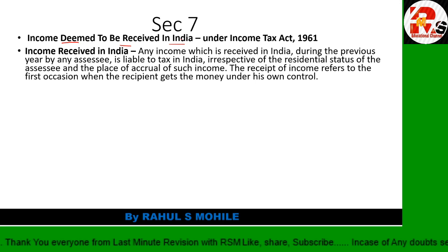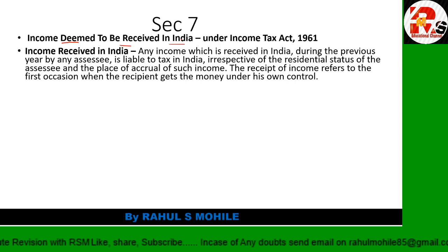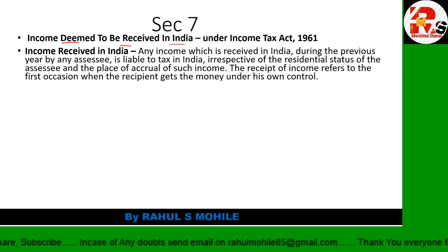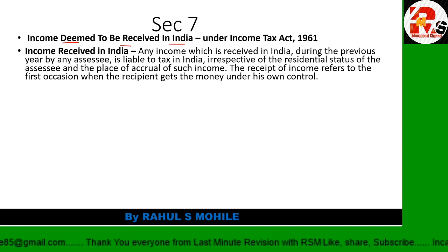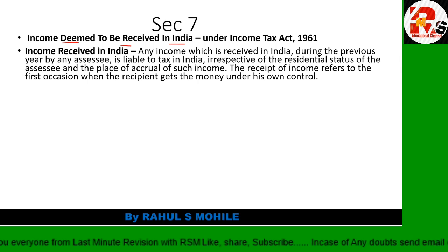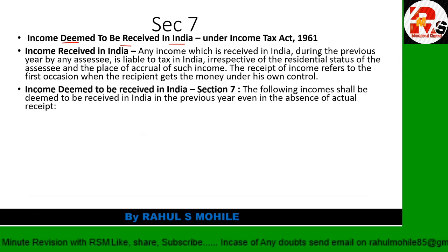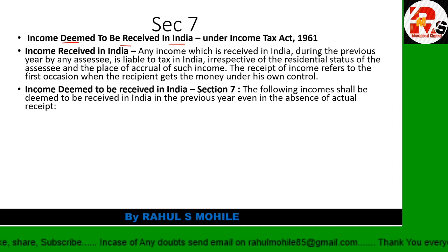'Income received in India' is the most easy point. For example, income received in Mumbai, income received in Delhi, income received in Kolkata, income received in Chennai - all these are received in India. So income received in India, income deemed to be received in India, and income accrued or arising in India are all covered. Income deemed to be received in India is covered under Section 7.